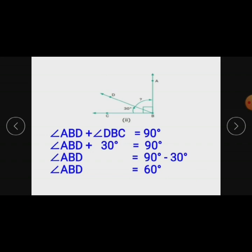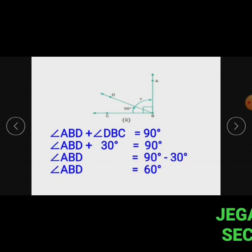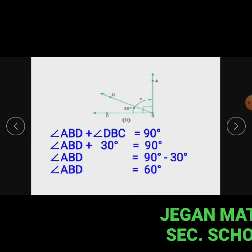In this figure, angle ABC is equal to exactly 90 degrees. Angle ABD plus angle DBC equals 90 degrees. Angle DBC equals 30 degrees. So angle ABD plus 30 degrees equals 90 degrees. Therefore angle ABD equals 90 minus 30, which gives 60 degrees.